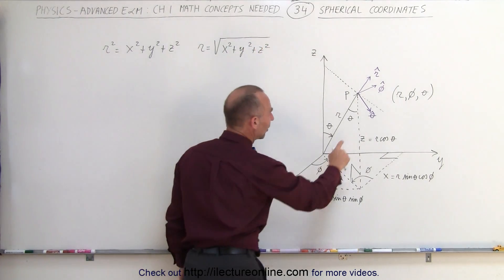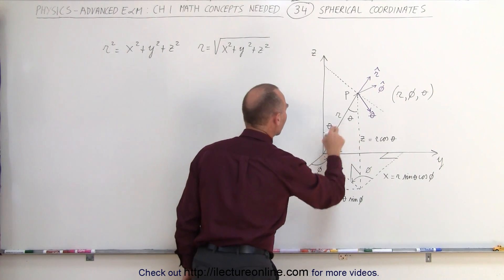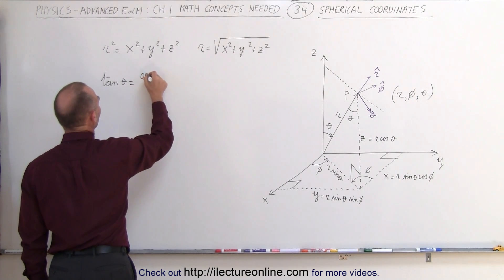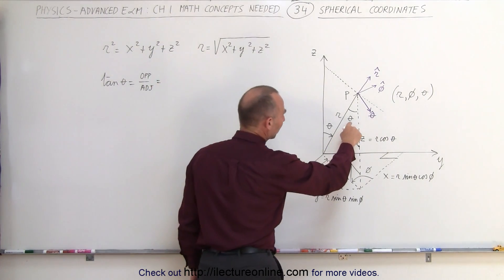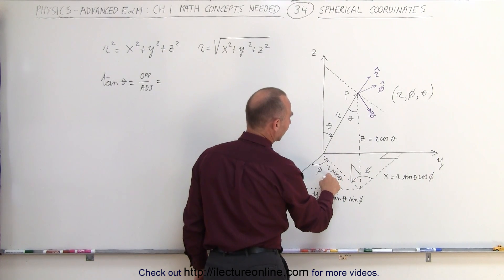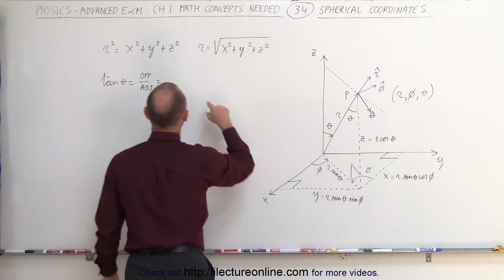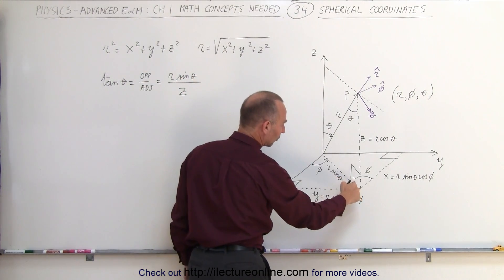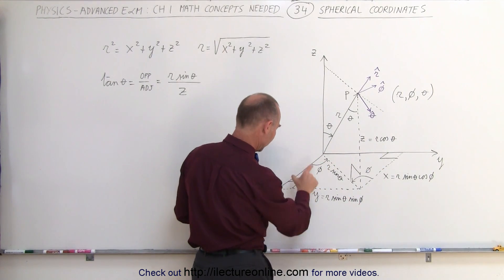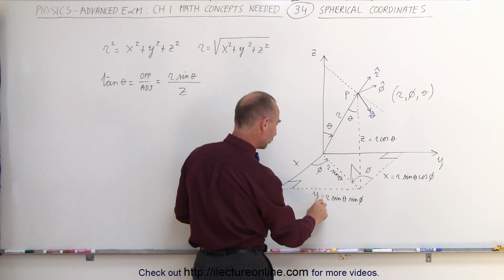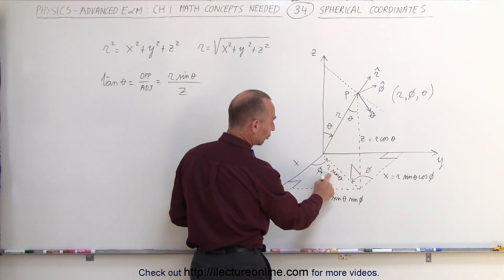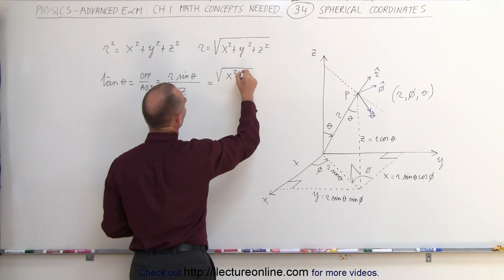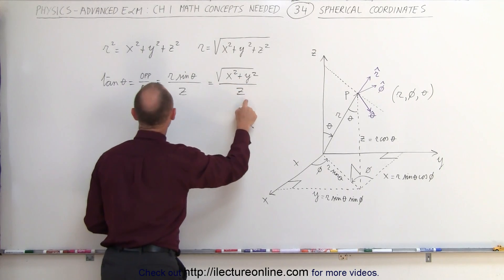We can also relate the angles theta and phi to Cartesian coordinates. The tangent of theta is the ratio of the opposite side divided by the adjacent side. The opposite side to theta is R sine theta and the adjacent side is z. Since R sine theta equals the square root of x squared plus y squared — as the hypotenuse of the triangle in the xy plane — the tangent of theta equals the square root of x squared plus y squared, divided by z.